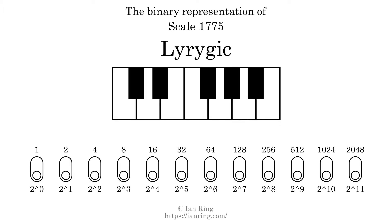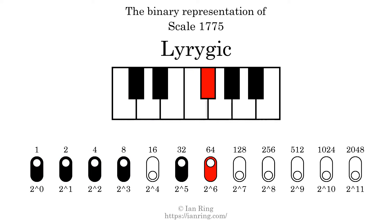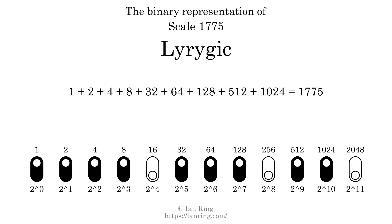The binary representation of this scale is determined by mapping tones of the scale to binary digits. Each binary digit represents a power of 2. To get the scale number, we add the powers of 2 together. The powers of 2 that are present in the scale, all added together, equals 1775. That is why the scale number, in decimal, is 1775.